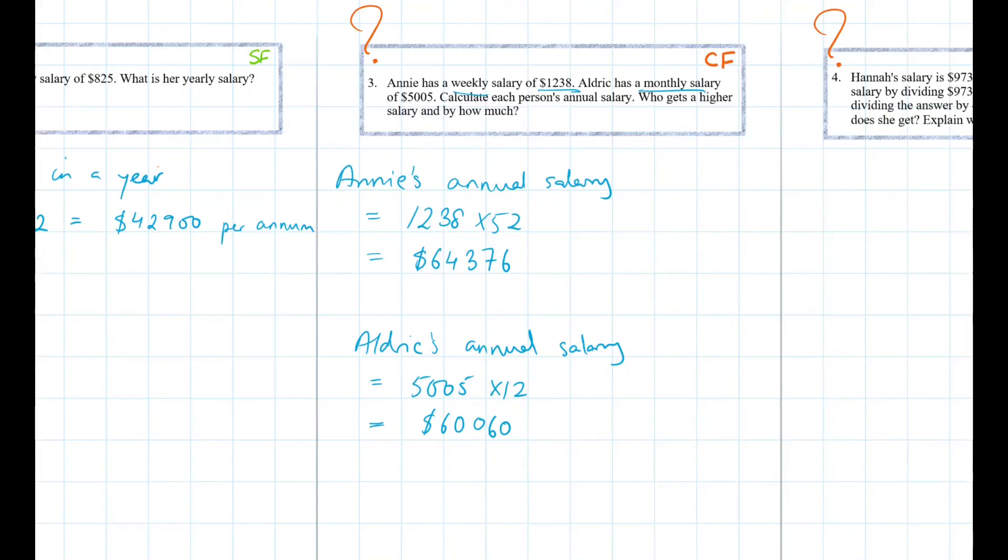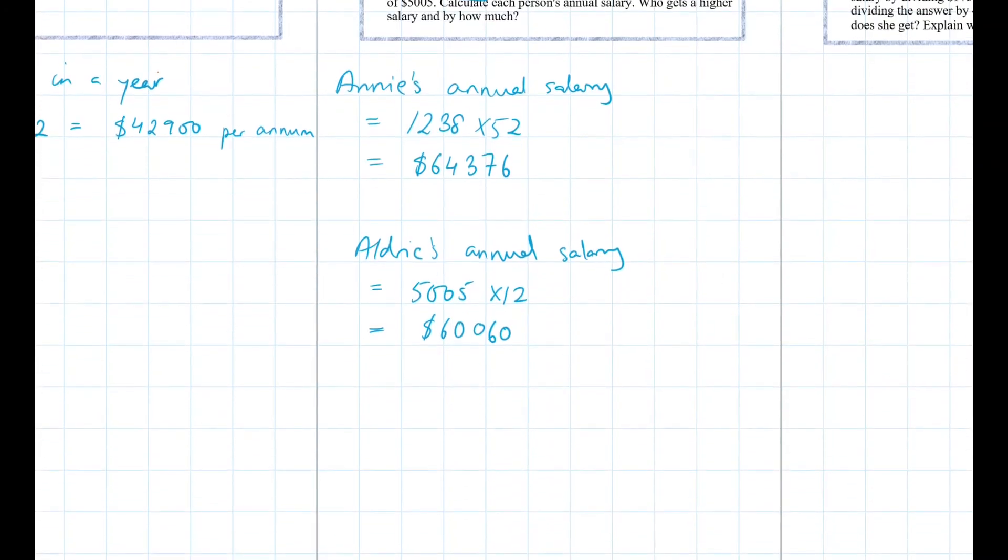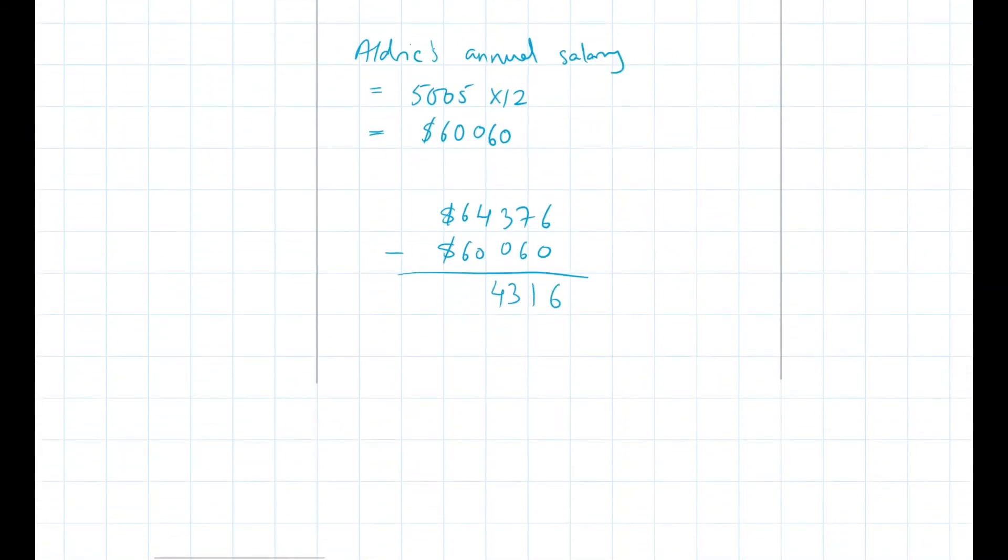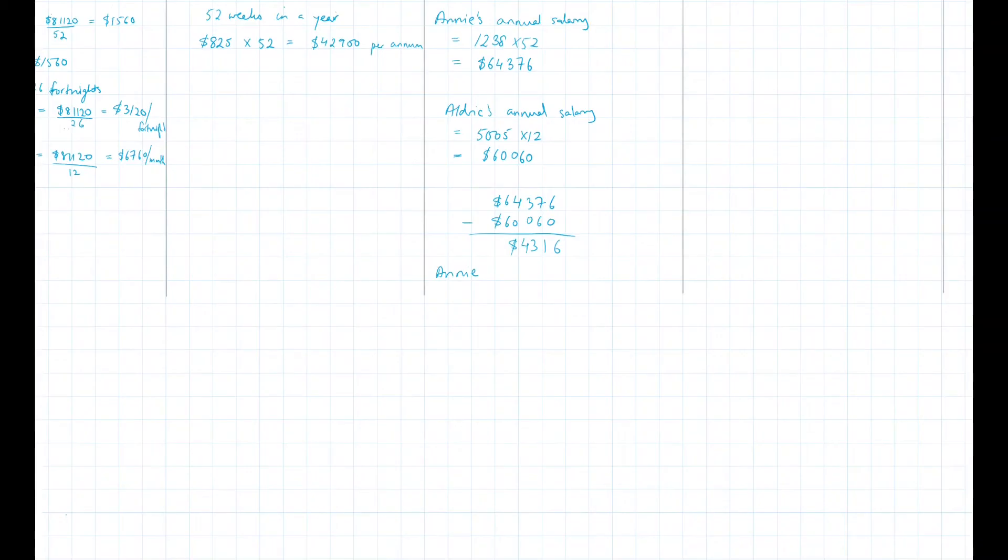Now looking at this, we know that Annie's getting a higher pay. Okay, so let's just see by how much. So we can do $64,376 minus $60,060. That's it. So for answering this, we'll say Annie gets $4,316. We can say Annie has a higher salary by $4,316.